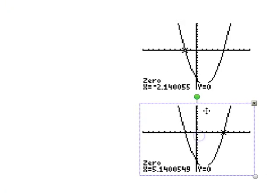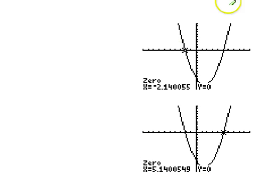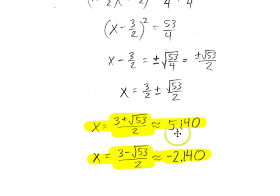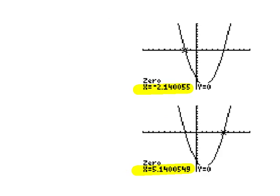Those are the two solutions the calculator has given us. You may recognize those numbers — they are the same two numbers I got earlier when we did this algebraically: negative 2.14 and positive 5.14. Going back to my algebraic solution, there are those same two solutions. The calculator and the algebra are agreeing with each other, and that is how you find two solutions with a graphing calculator.